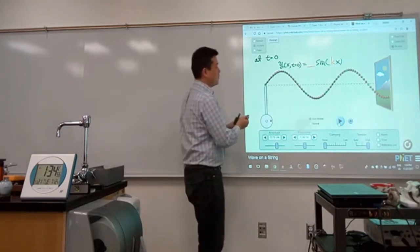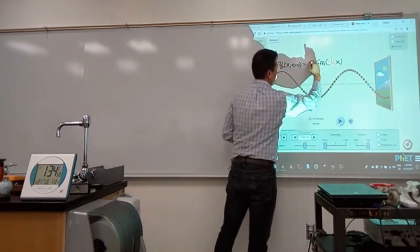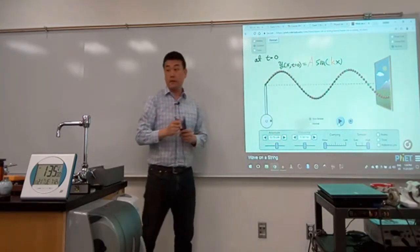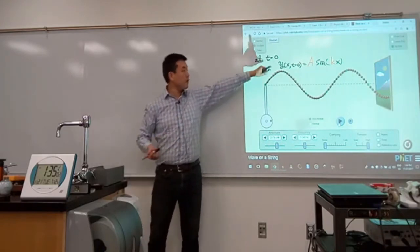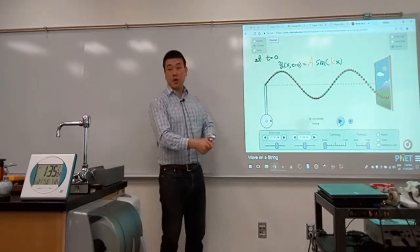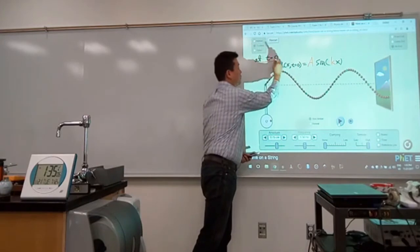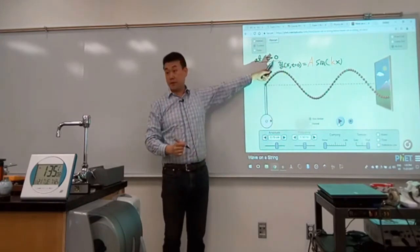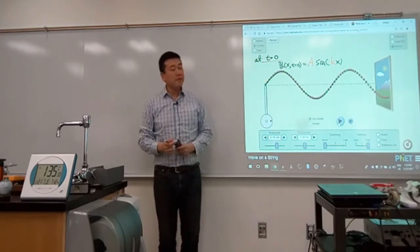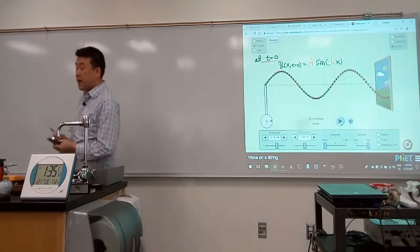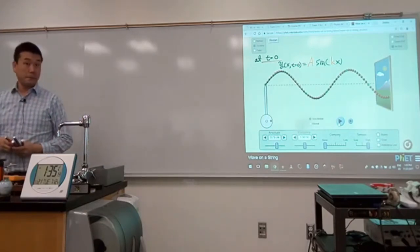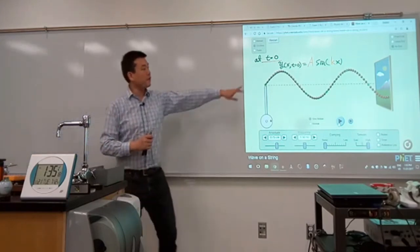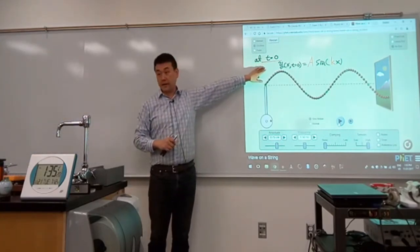And we need one more constant here. That's the amplitude that we have already been talking about. So this function will work for describing wave at time equals zero. It works for a snapshot picture. But we need to be able to describe the wave as a function of time as well. So using this as a starting point, how should we modify it?